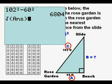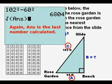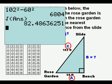We take the square root of 6,804. And ANS again is the last number calculated. And we get 82.48636251.